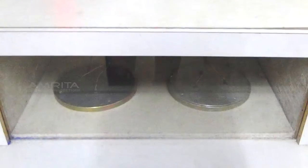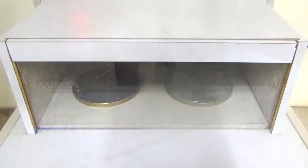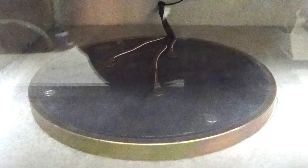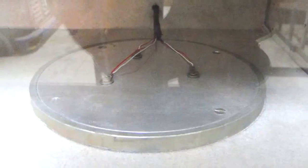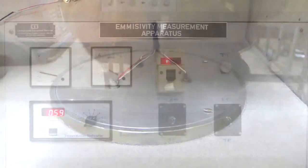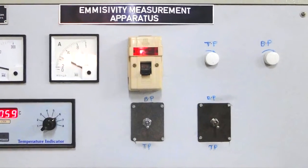It is kept in an enclosure so as to provide undisturbed natural convection surroundings. The heat input to heaters is varied by two regulators and is measured by an ammeter and voltmeter.